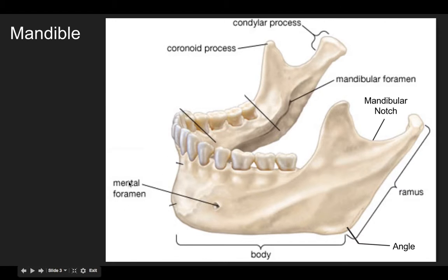We also have the mental foramen, which is a small hole on the anterior of the mandible. There is one on each side of the mandible, and this hole basically allows nerves to come through the jaw and go towards the teeth.